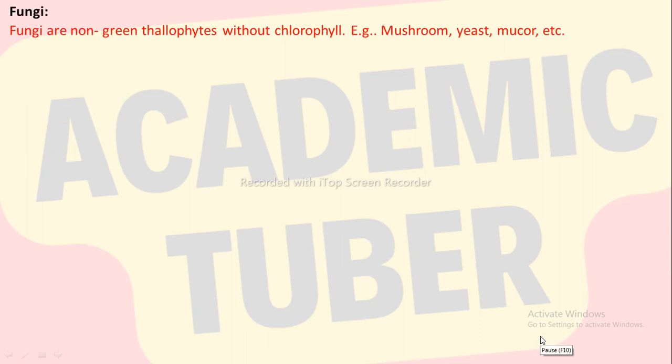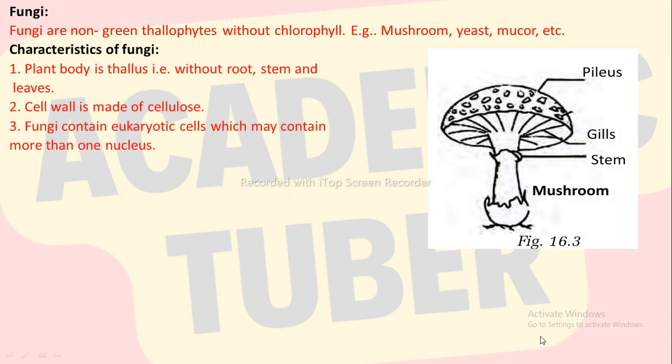Fungi. Fungi are the non-green thallophytes without chlorophyll, for example mushroom, yeast, mucor, etc. Characteristics of fungi: the plant body is thallus, i.e. without root, stem and leaves. The cell wall is made of cellulose. Fungi contain eukaryotic cells which may contain more than one nucleus.